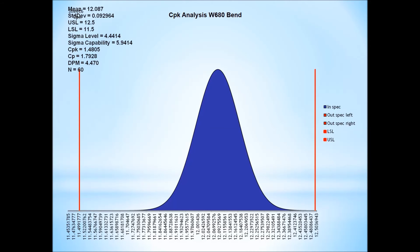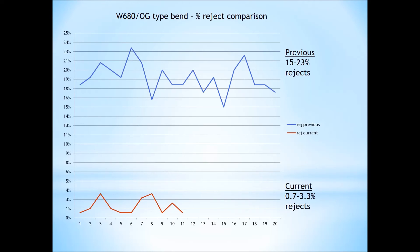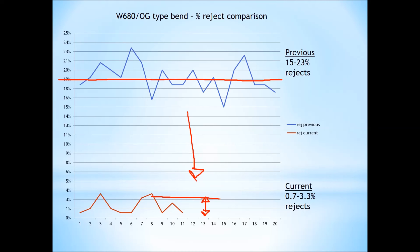Let's look at the results. Look at the defect rate — wow. We were sitting up there between 15 and 23 percent, sitting nice and regular. They sorted that problem out, and bang — we're down here: 3 to 0.7 percent. That's probably those other defects from the Pareto diagram that will need sorting out at some point. But when the guy presented this, he said to me: is that it? Is it that easy? I said yes, of course it's that easy. It's supposed to be easy. That's what Six Sigma does — it makes problem solving easy. But this problem had existed for two years.